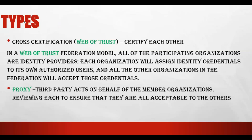We have seen multiple types of federation models. In cross-certification — also known as web of trust — each party cross-verifies the other. All organizations in the federation can accept each other's credentials, meaning every party can act as both identity provider and service provider. Each organization assigns credentials to its own authorized users, and all other organizations in the federation accept those credentials. In a proxy model, a third party acts as the identity provider and all remaining parties act as service providers.